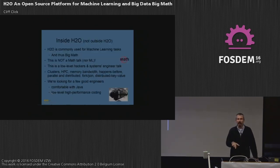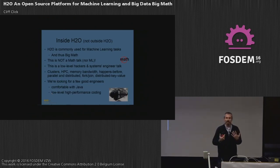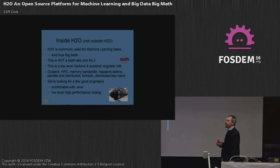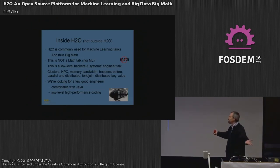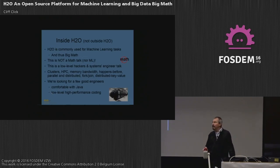This talk is not about the ML algorithms themselves — it's really about how we implement them. I am not a mathematician, and that's not my expertise. Instead, this is a low-level hacker talk, a low-level systems engineering talk. I'm going to talk about clusters, high-performance computing, memory bandwidth, distributed parallel execution, happens-before relationships, distributed key-value stores, and things like that.